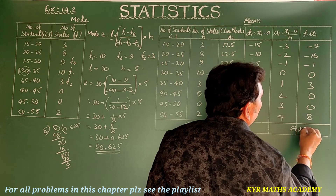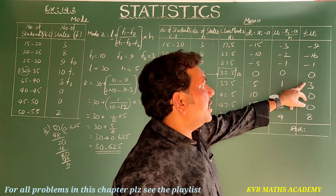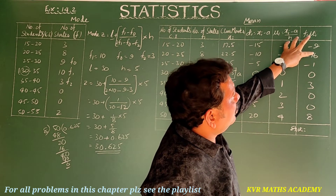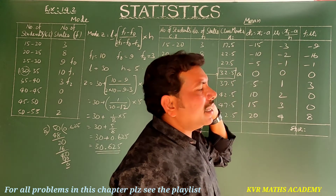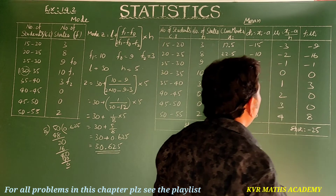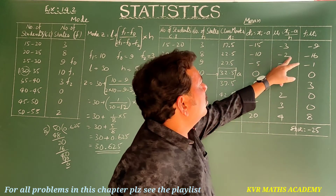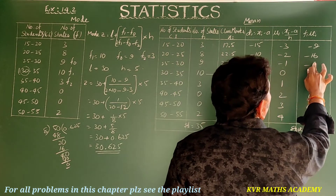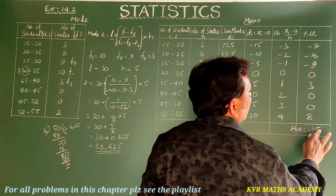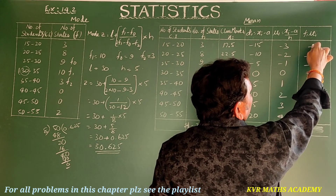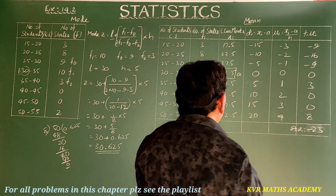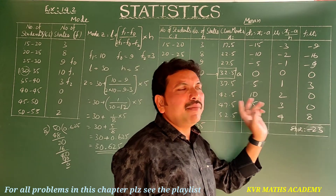Sigma fi × ui: adding −9, −16, −9, 0, 3, 0, 0, 8. The negative sum is −9−16−9 = −34, and the positive sum is 3+8 = 11. So sigma fi × ui = −34 + 11 = −23. And sigma fi = 35.